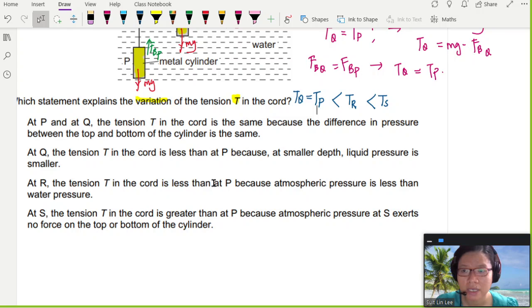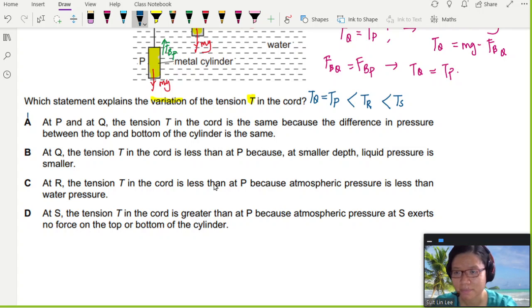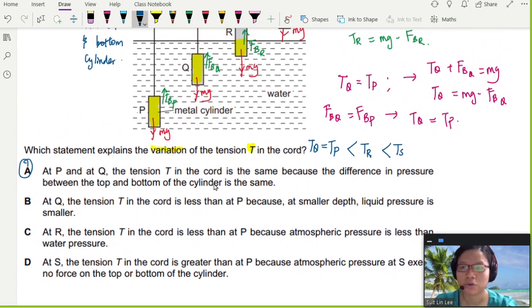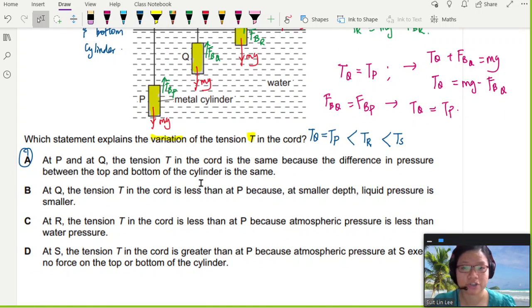So let's compare the statements. At P and Q, the tension is the same because the difference in pressure between the top and the bottom cylinder is the same. Yep, that is your answer, A. So once again, buoyancy force is due to pressure difference. This is a pretty common objective question about the idea that buoyancy force is due to pressure difference when the object is submerged in a fluid.